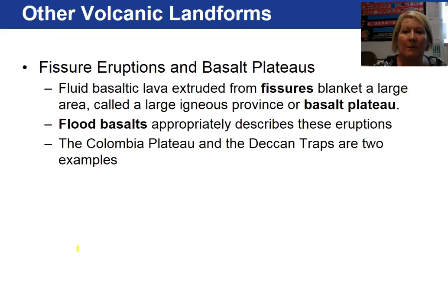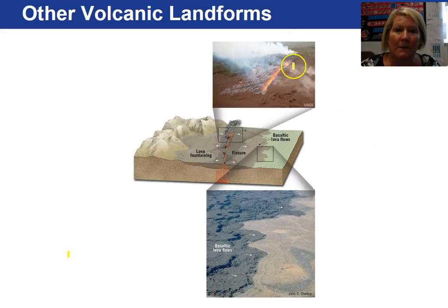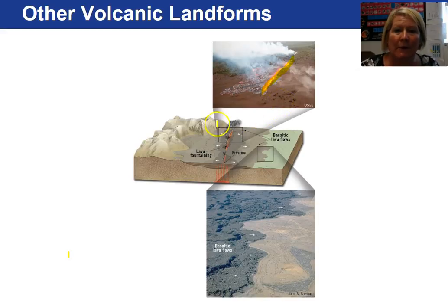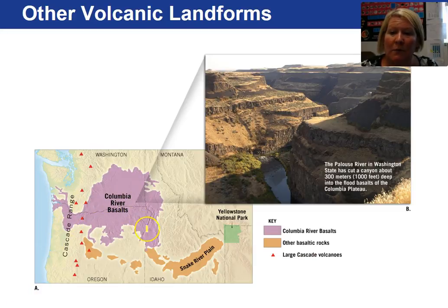Examples of flood basalts are the Columbia Plateau of Northwest North America and the Deccan Traps in India. Here the fissure allows fluid basalt to pour out onto the surface producing a plateau area. This is a picture from Idaho Falls of a flood basalt. The Columbia River basalts average about one and a half kilometers in thickness and erupted 17 million years ago.